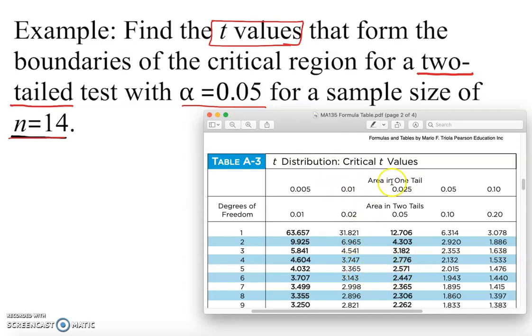The first row shows area in one tail. Does the problem state one tail? No, the problem states two tail, so we're going to work with the second row. These are commonly used alpha levels - 0.01, 0.025, 0.05, and so on. This is basically the alpha level. Since alpha is given as 0.05 and this is two-tail, we're going to use the second row.